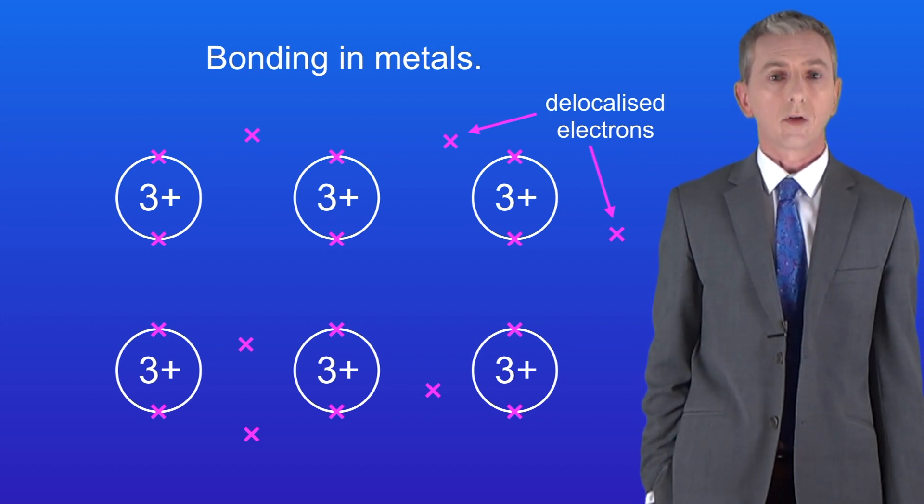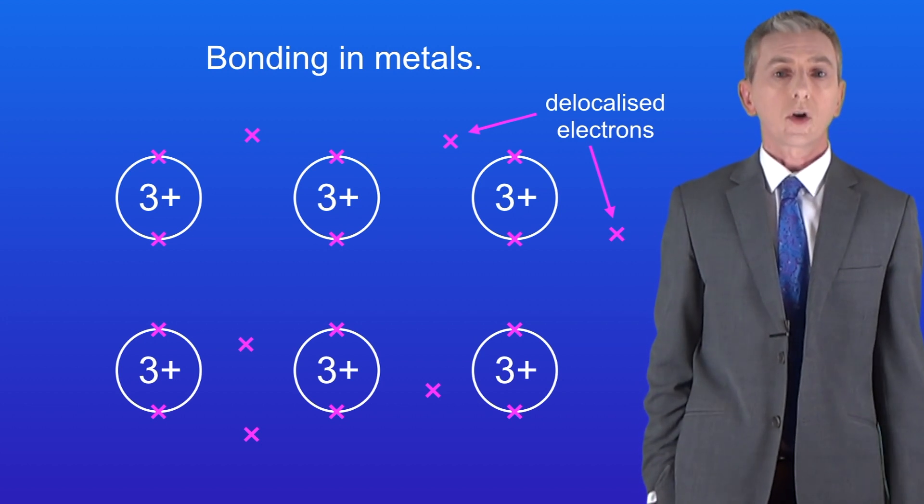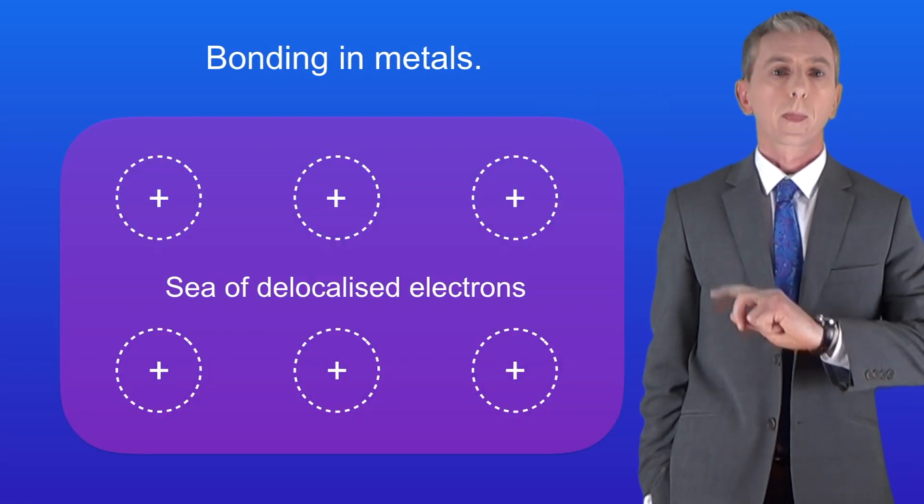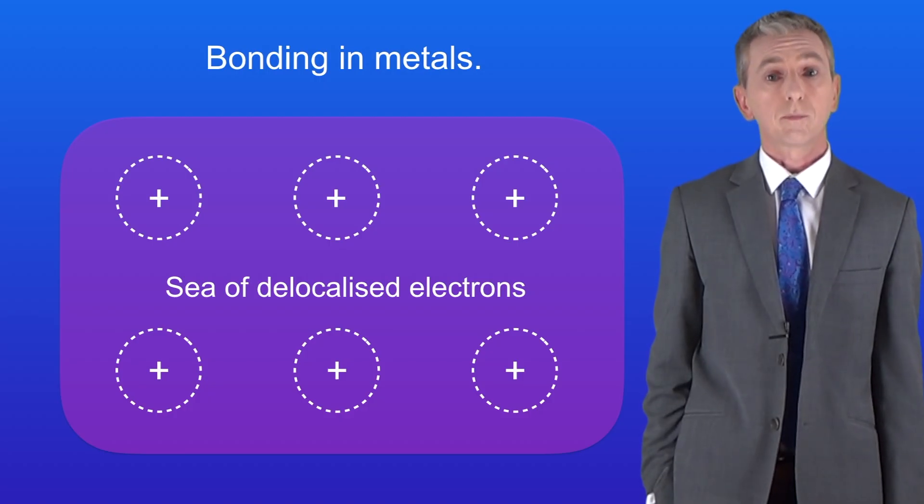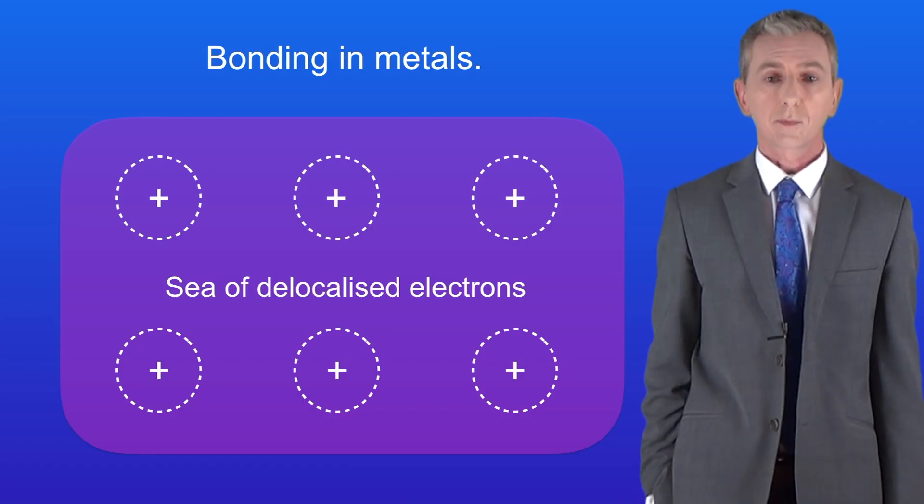Scientists call this a sea of delocalized electrons, and it's often shown like this. Now because each metal atom has lost its outer electrons, we now refer to them as metal ions. But remember that this is not ionic bonding, this is metallic bonding.